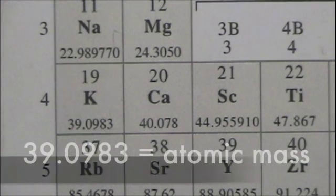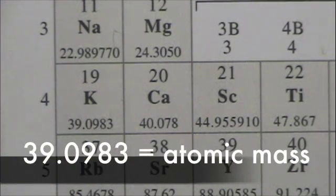Back to potassium. K. The big number, 39.0983, that's the atomic mass, how much potassium weighs. So 39.0983 atomic mass units.